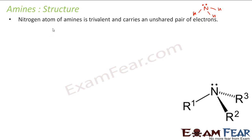So if you see the nitrogen here, atom of this amine is trivalent. 1, 2, 3. It carries unpaired electron. So it has one unshared pair of electron plus it is trivalent.